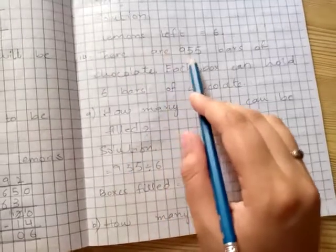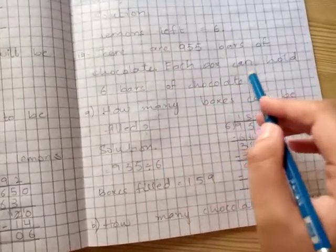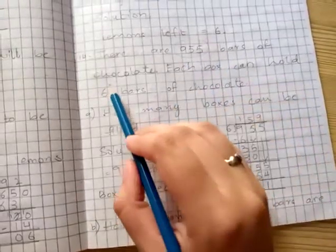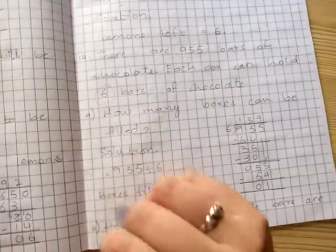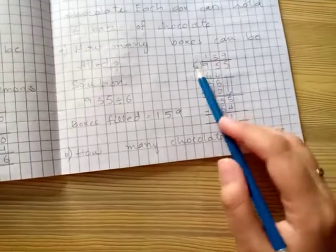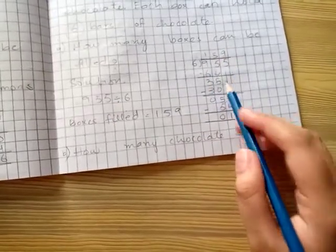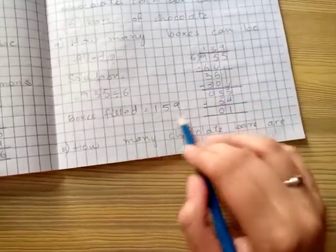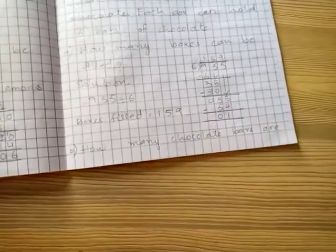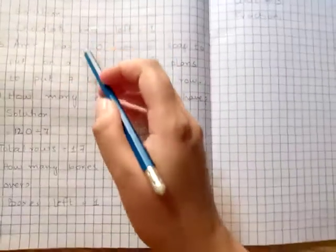14th part. There are 955 bars of chocolate. Each box can hold 6 bars of chocolate. 955 bars total, each box can hold 6 bars. 955 divided by 6, if you have the answer, you have the answer 159, which is filled with your total boxes. And then you have the remainder, how many chocolate bars are left? That is 1.